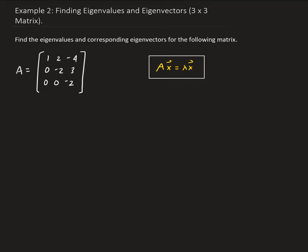In this example, we want to find the eigenvalues and corresponding eigenvectors for the following matrix. We're going to look at a 3 by 3 matrix. The process is pretty much the same — we're just working with a slightly larger matrix.